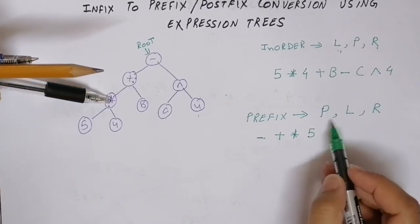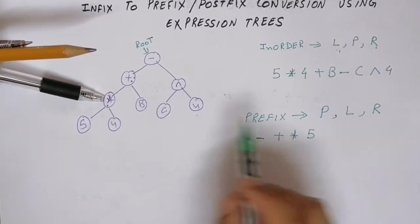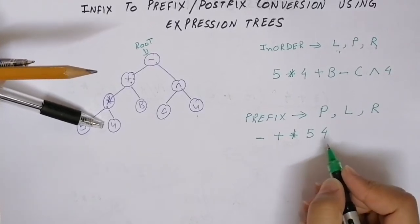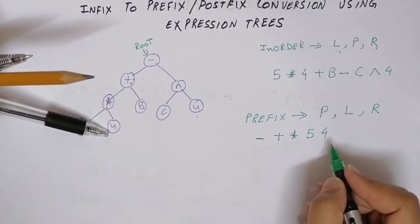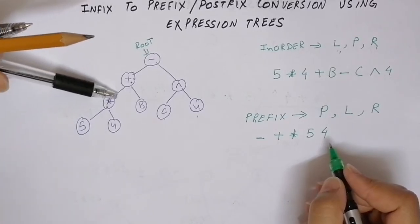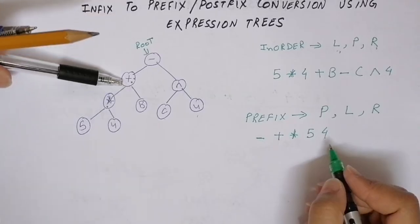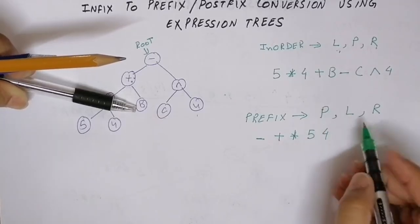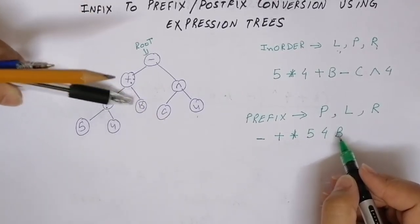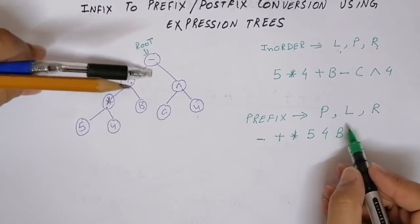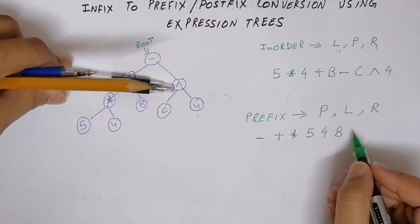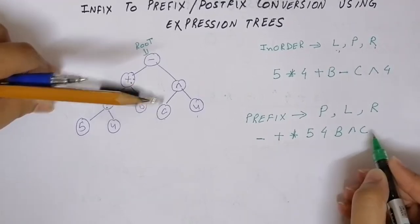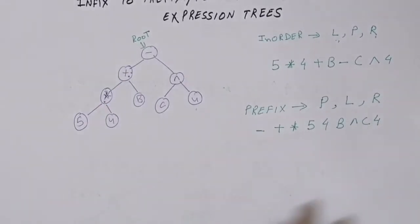Five returns to multiply. Multiply's left subtree has returned so it visits its right subtree, which is 4. After both subtrees return, we move back to plus. Plus's left subtree has returned so we go to its right which is B. Both subtrees of B have returned so we move to minus. Minus's left subtree has returned so we look for the right subtree — power. Power visits itself then moves left to C, then right to 4.